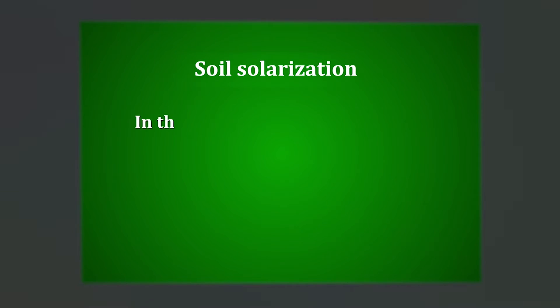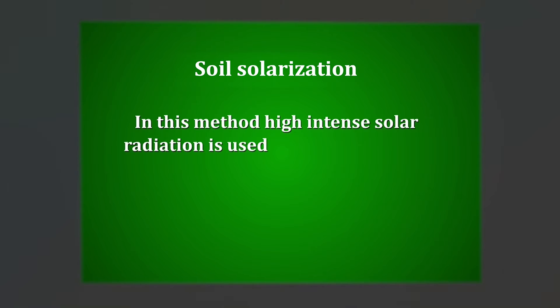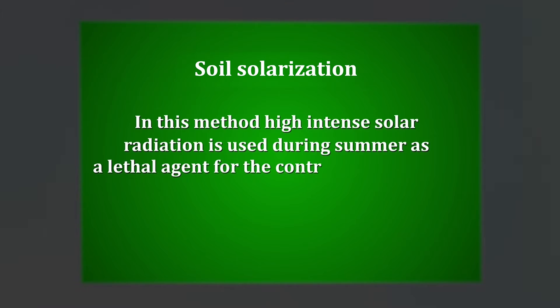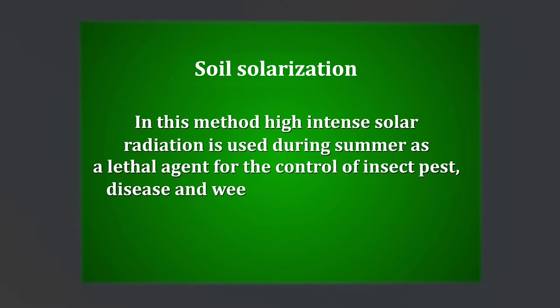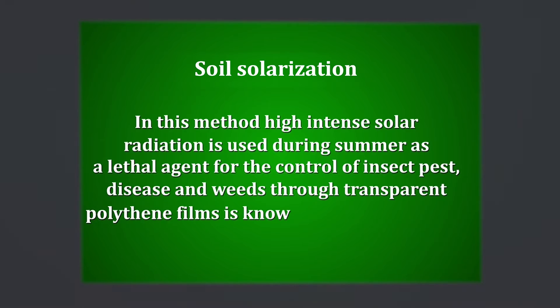The first method of sterilization of growing media is soil solarization. In this method, high-intensity solar radiation is used during summer as a lethal agent for control of insects, pests, diseases, and weeds through transparent polythene films. This is known as soil solarization.